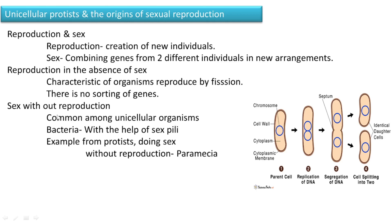The next condition is sex without reproduction — where mixing up of genes occurs without reproduction taking place. This is common among unicellular organisms. In bacteria also, this type of sex without reproduction is happening, occurring with the help of sex pili.